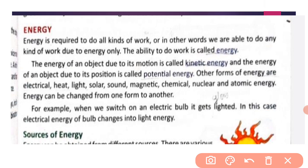The energy of an object due to its motion is called kinetic energy. The energy of an object due to its position is called potential energy. Other forms of energy are electrical, heat, light, solar, sound, magnetic, chemical, nuclear, and atomic energy. Energy can be changed from one form to another.